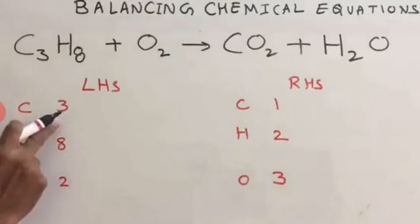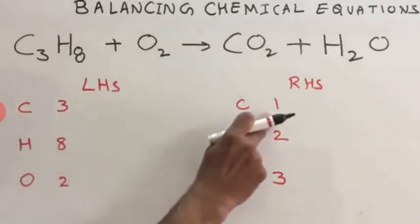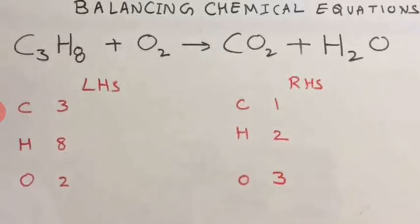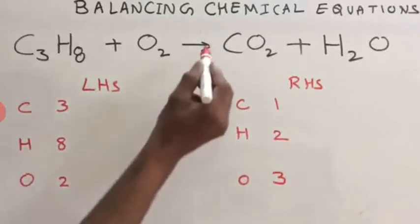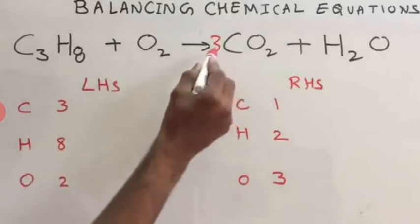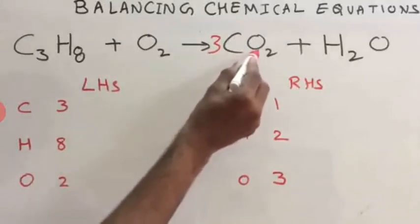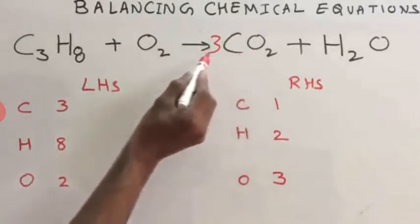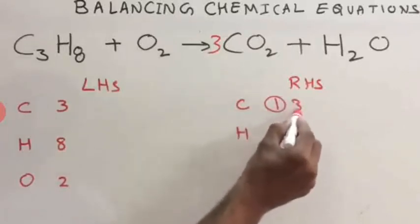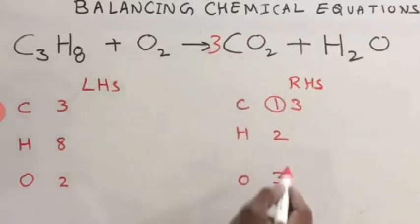On LHS you have 3 carbon, on RHS you have 1 carbon. So this carbon must be 3. To make this carbon 3, simply multiply with 3. If you multiply with 3, then this 3 is multiplied to C as well as with the oxygen. So the new carbon number will be 3, and the new oxygen number will be 3 twos are 6.